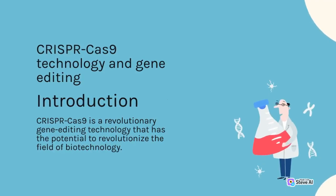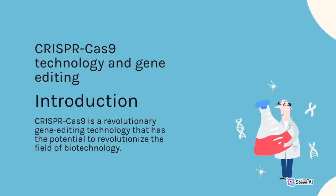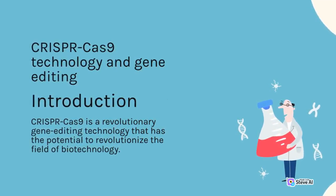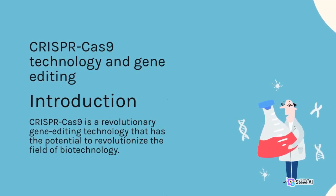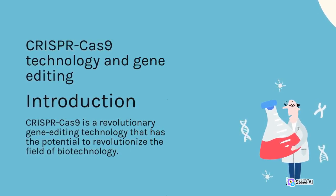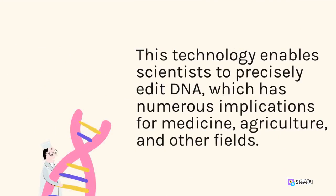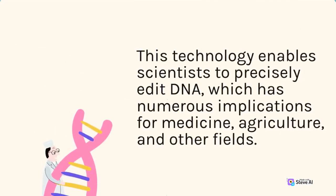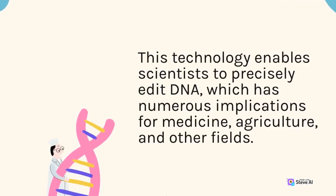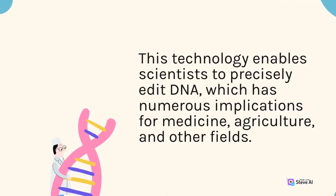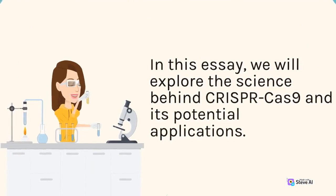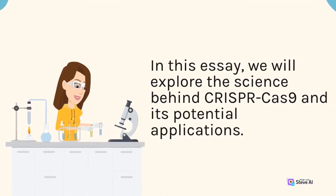CRISPR-Cas9 is a revolutionary gene editing technology that has the potential to revolutionize the field of biotechnology. This technology enables scientists to precisely edit DNA, which has numerous implications for medicine, agriculture, and other fields. In this essay, we will explore the science behind CRISPR-Cas9 and its potential applications.